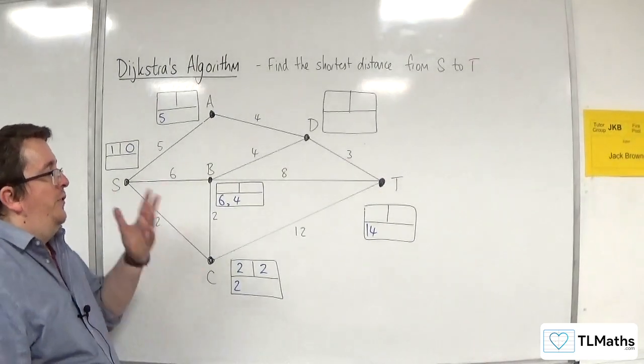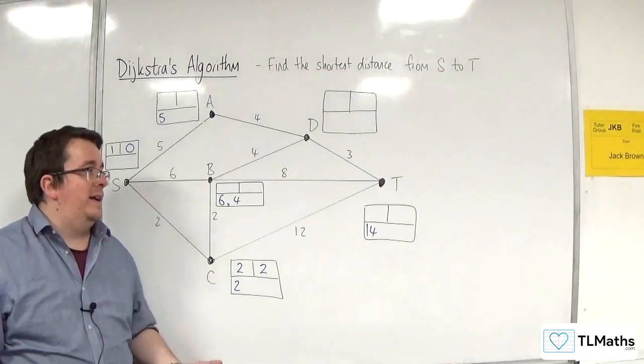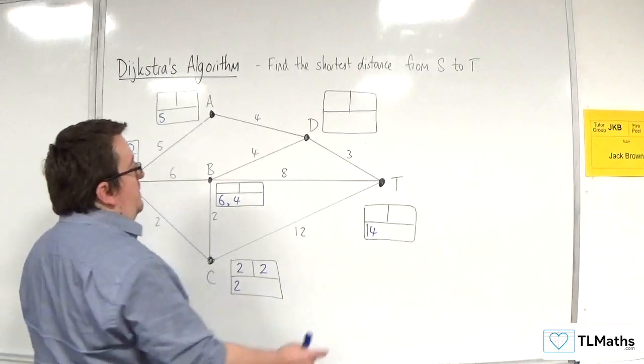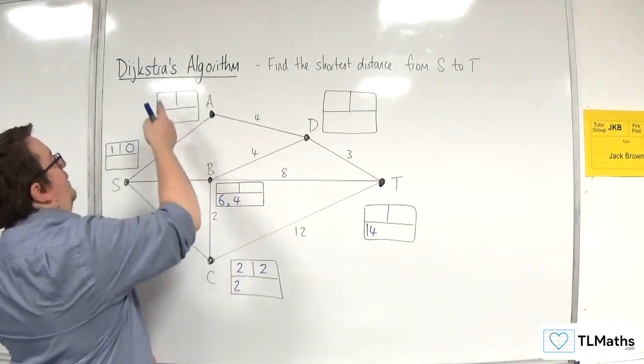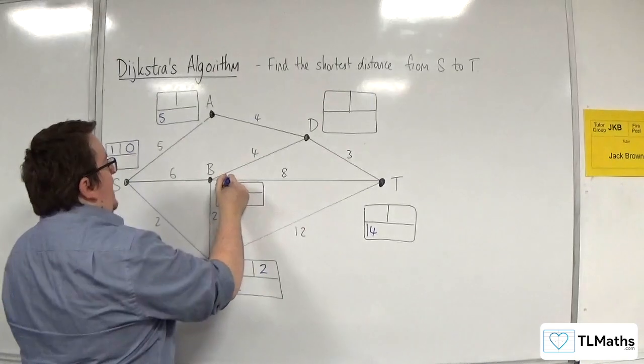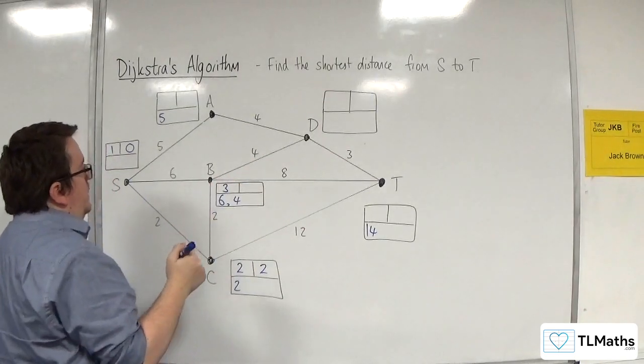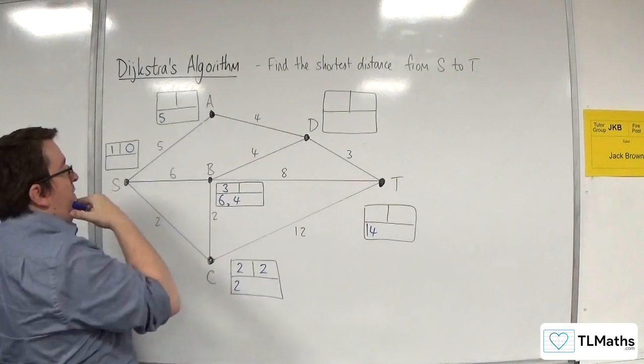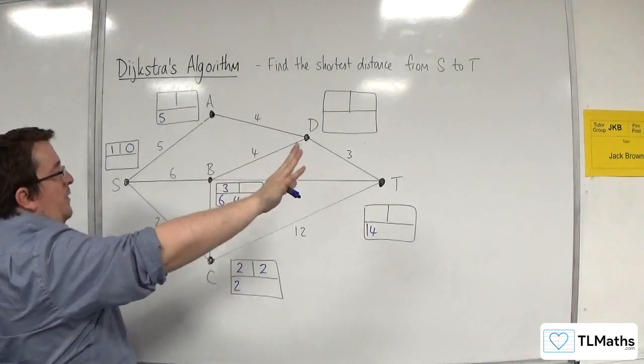So I now choose the next smallest working value, and that identifies the next vertex to consider. So we have 14, four, and five. So B is the next one. So that's going to get labeled three. Now, you don't go back along any vertex. You just keep pressing on.